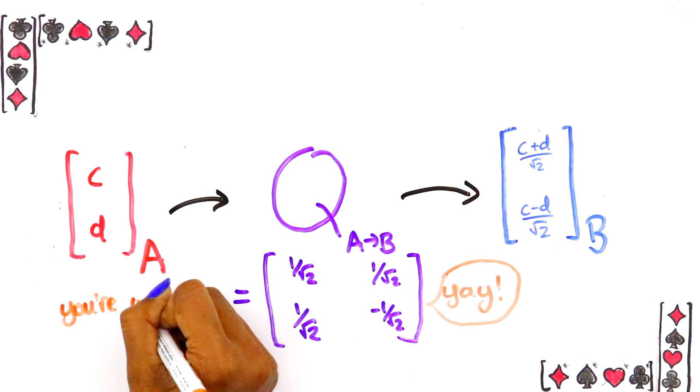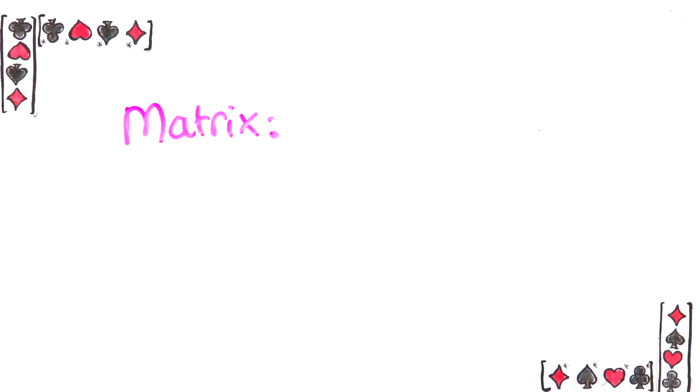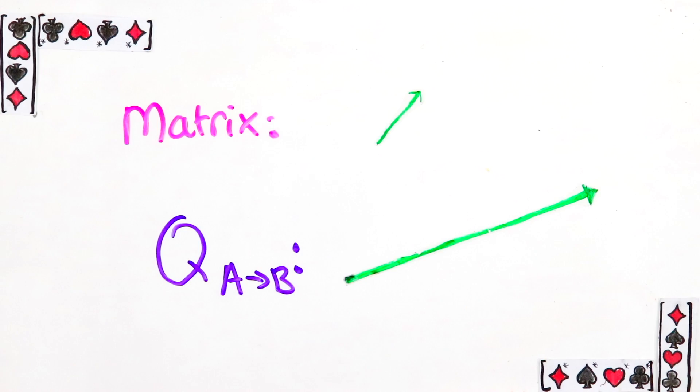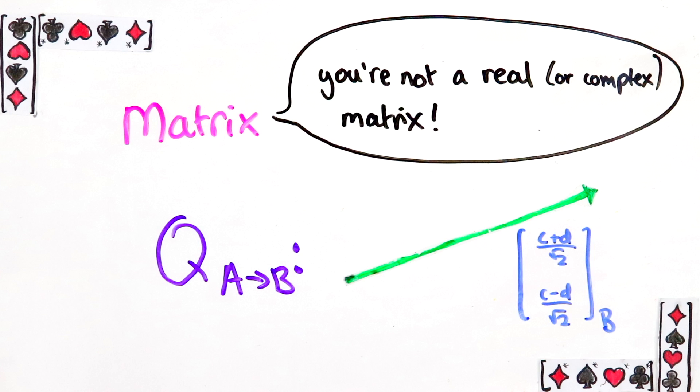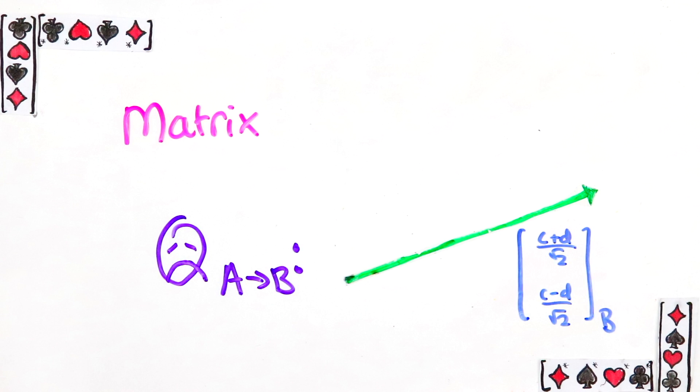But there's one really strange thing about this matrix. Usually a matrix takes a vector and transforms it to some other vector. That's not what's happening here. The matrix takes a vector and gives you back the exact same vector, it just changes how you describe it. That's something to keep in mind, but despite this, the change of basis matrix is very useful.